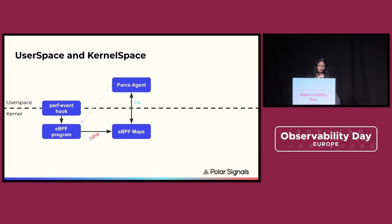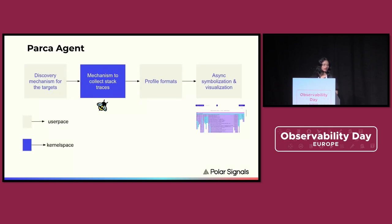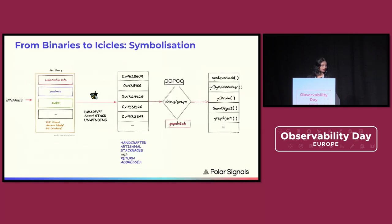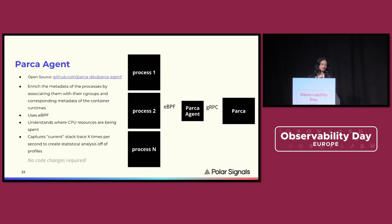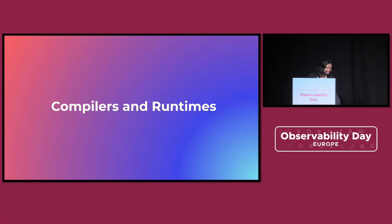How does the PARCA agent do this? We profile using eBPF with the perf event hook, which helps us read the registers. 19 times every second it sends data to the server. That's how we go from a cycle of binaries — we look underneath them, we have DWARF information and frame pointers — we use that to fetch memory addresses, compress them, send them, and then use the server to symbolize the memory addresses. And voilà, we have our stack traces.